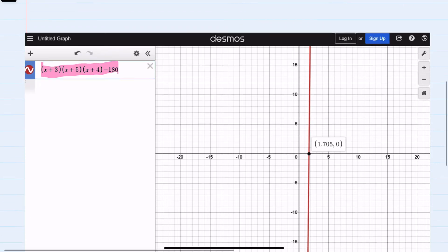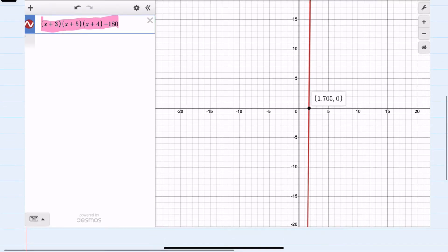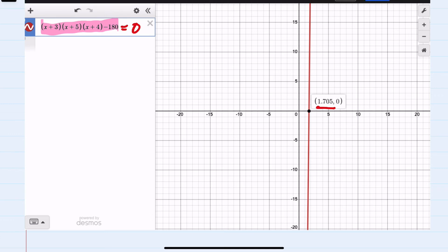That will be where this function equals 0, and it happens at this X value. From our instructions, we were told to round to two decimal places.